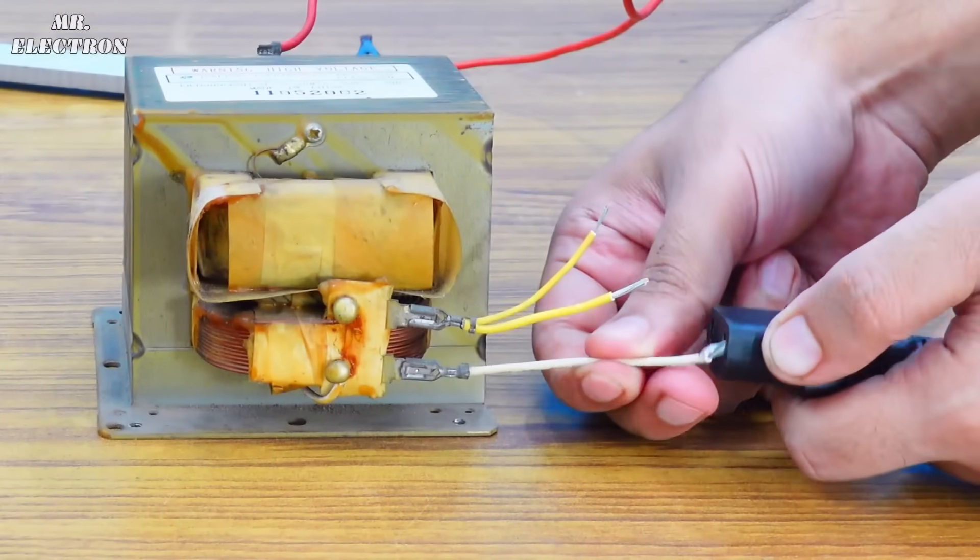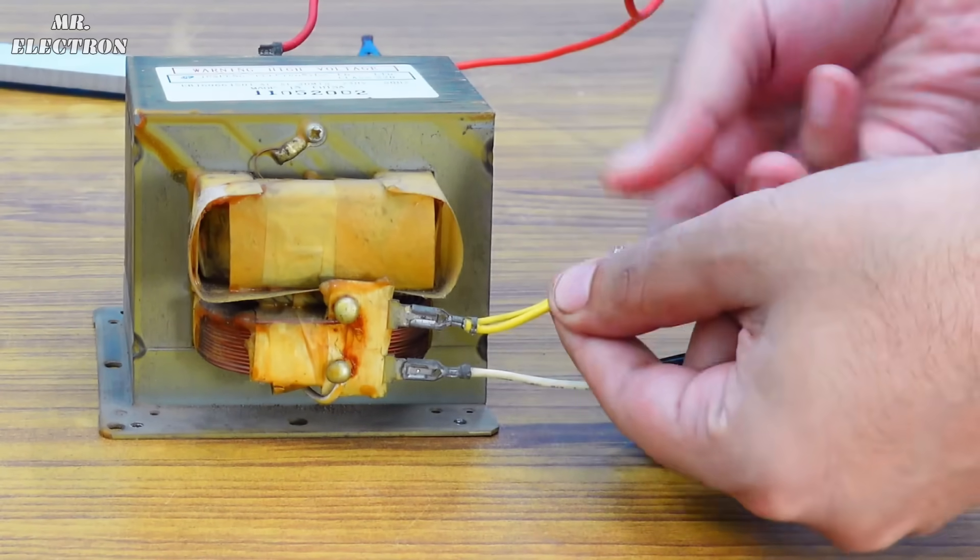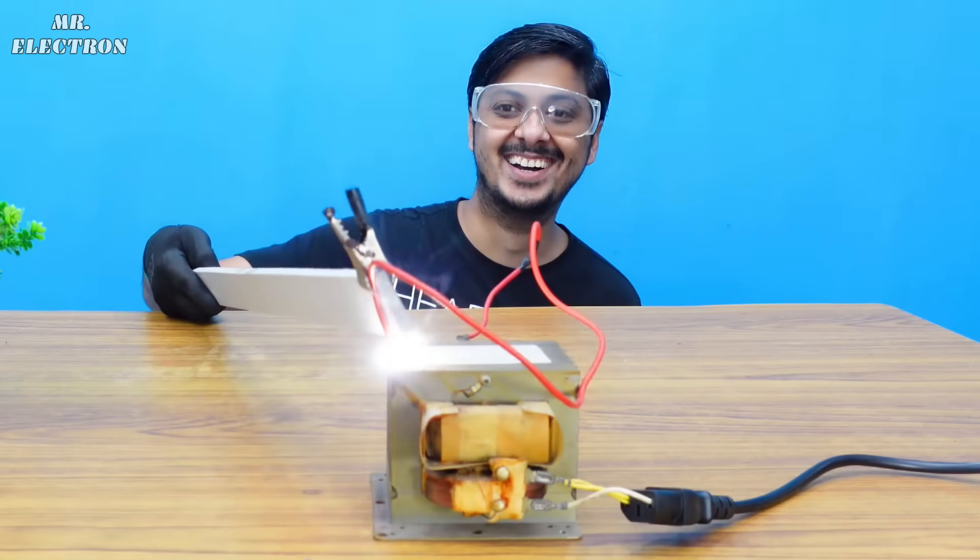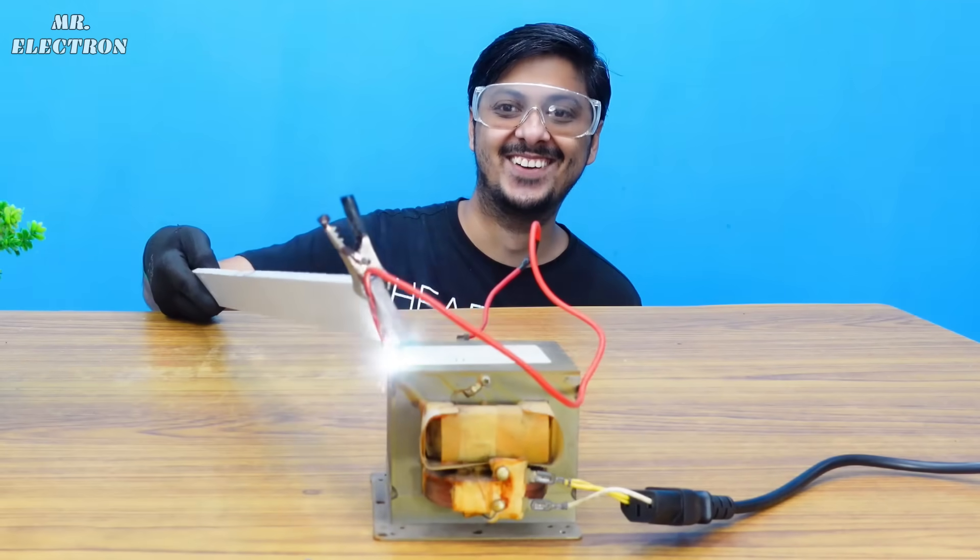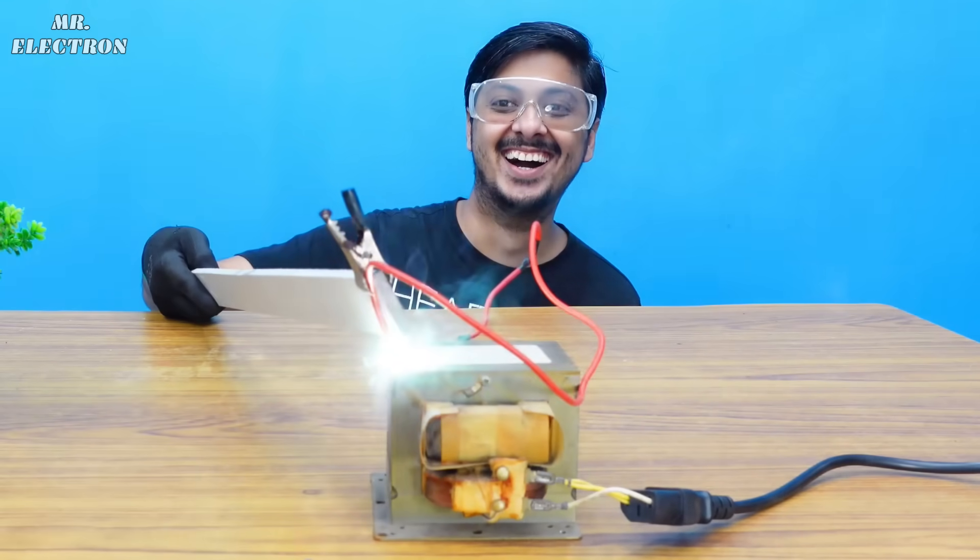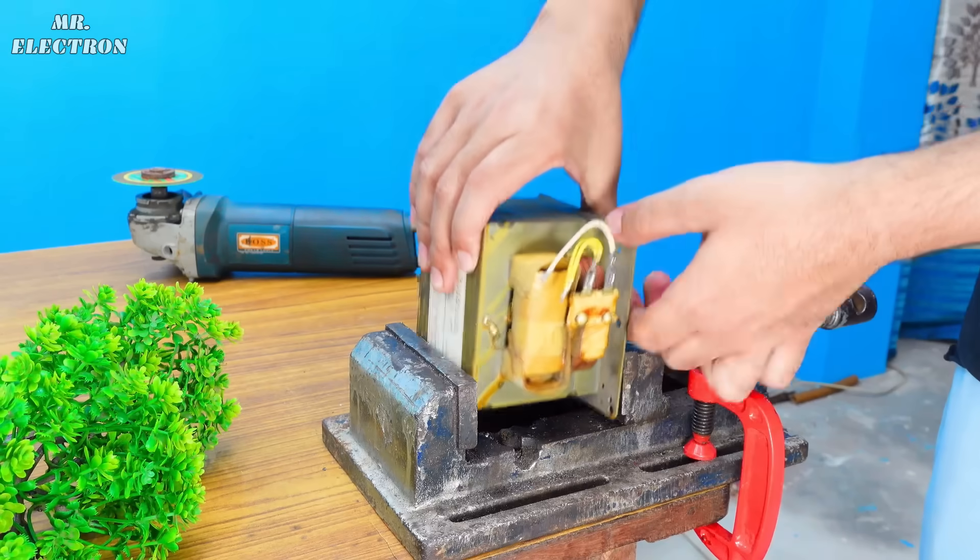Let's strip the transformer winding wires so we can move on with the testing part. Please note that this transformer can output up to 2000 volts AC with one amp output current, which is extremely dangerous and can definitely kill anyone. Here you can see the arc length of the output windings - it is phenomenal, so try not doing it at home.